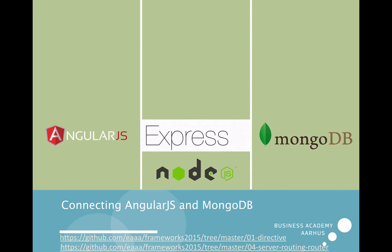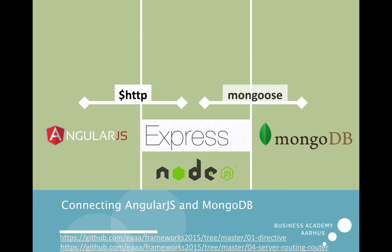I will show you where to find the code I'll be using later on in this presentation at GitHub. So when we connect AngularJS with Node, we use the $http service, which we use to find data in our JSON file in our local folder. And then to connect Express or Node with MongoDB, we use the Mongoose module.